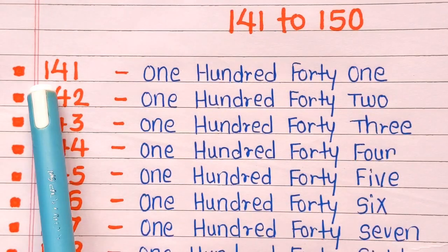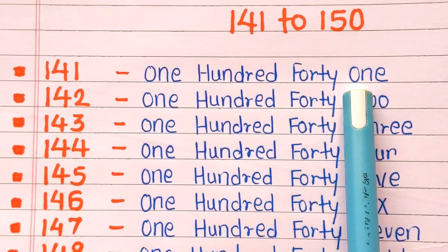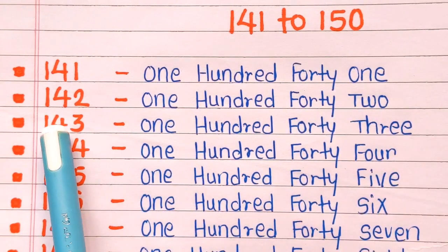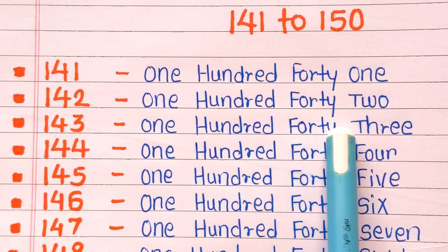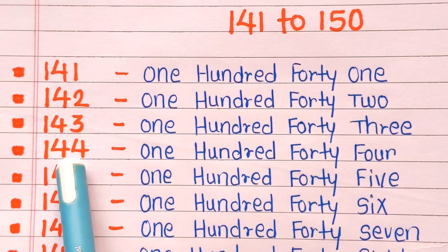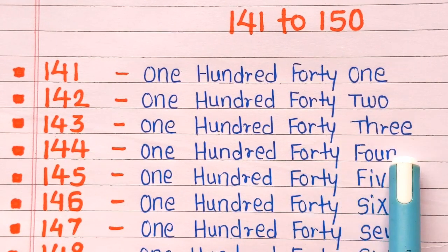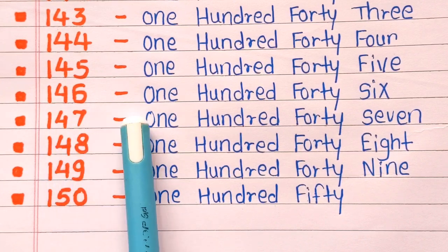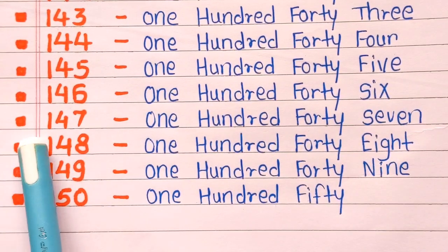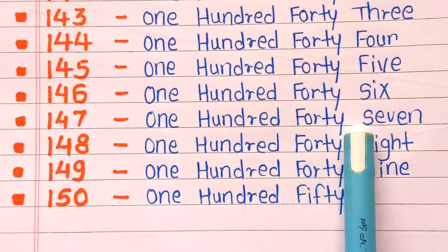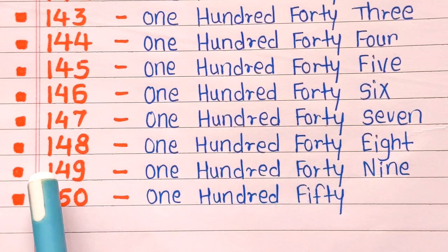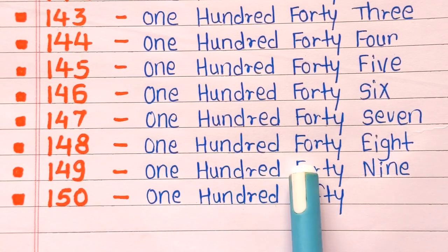Okay? 141 is one hundred forty one. 142 is one hundred forty two. 143 is one hundred forty three. 144 is one hundred forty four. 145 is one hundred forty five. 146 is one hundred forty six. 147 is one hundred forty seven. 148 is one hundred forty eight. 149 is one hundred forty nine.